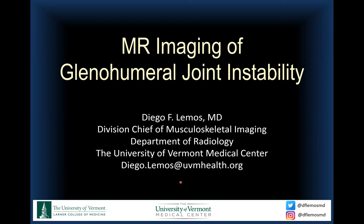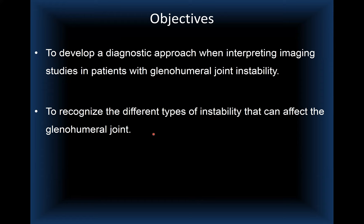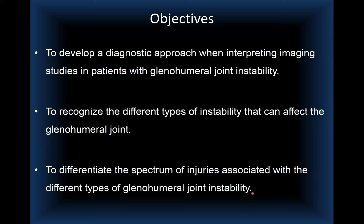I have no disclosures. The objectives of this lecture are: to develop a diagnostic approach when interpreting imaging studies in patients with glenohumeral joint instability; to recognize the different types of instability that can affect the glenohumeral joint; and to differentiate the spectrum of injuries associated with each type.